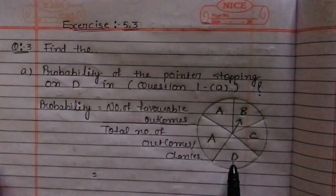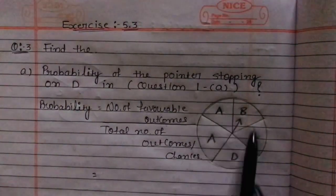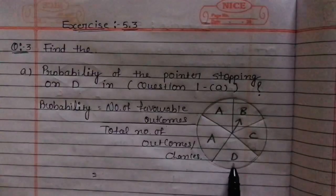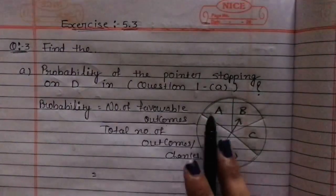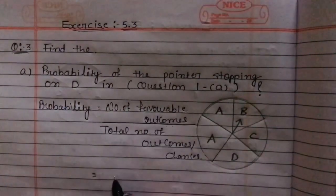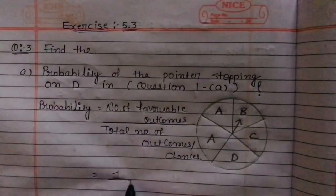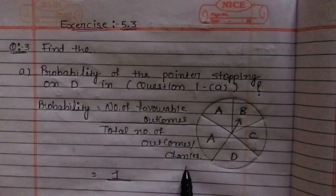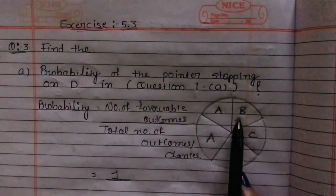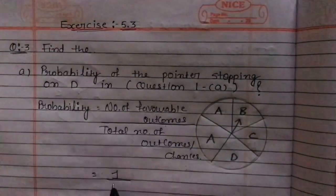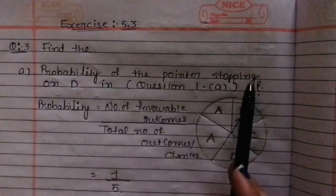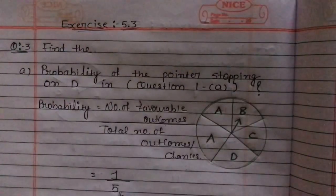उसकी probability हमें find करनी है। So now यहाँ पर आप देख सकते हो — A, B, C and D. So D पर कि पूइंटर आएगा, ऐसे कितनी probability है, कितने chances है — only 1। कि अगर एक बार हम घुमाएंगे तो एक बार ही D पर आ सकता है। So यहाँ पर number of favorable outcomes में आएगा 1, upon में total number of outcomes — 1, 2, 3, 4 and 5 — so upon में आएगा 5। So हमें probability मिल गई है — probability of pointer stopping on D, that is 1 upon 5.